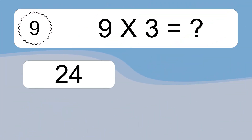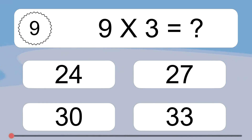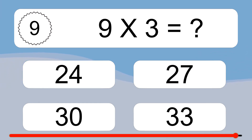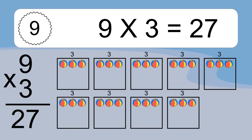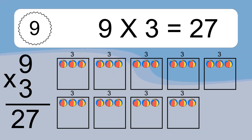9 times 3 equals what? 9 times 3 equals 27. We have 9 boxes, and each box has 3 colorful balls inside. If you count all the balls in all the boxes together, you will have 9 times 3 balls. This equals 27 balls.